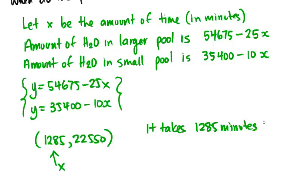It takes 1,285 minutes for the pools to have the same amount of water in them. Most people don't talk in minutes when they get to big numbers like this, so you can translate that into hours by dividing by 60, or into days if it's going to take longer than one day to drain these pools.